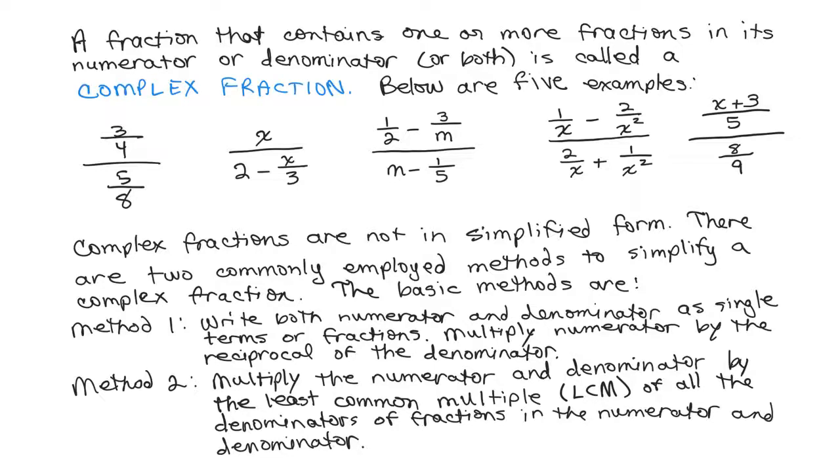In my example, the very first one is in that form, so method one works very well for that. For the rest of them, method two is actually easier for most people. You multiply the numerator and denominator of the complex fraction by the least common multiple of all the denominators of fractions in the numerator and denominator, and this eliminates the complex fraction in the first step.